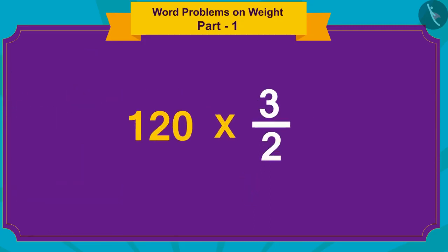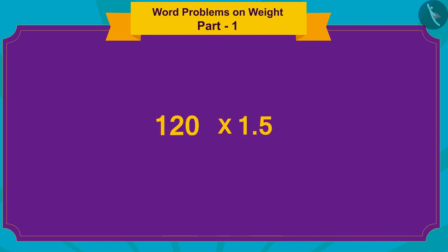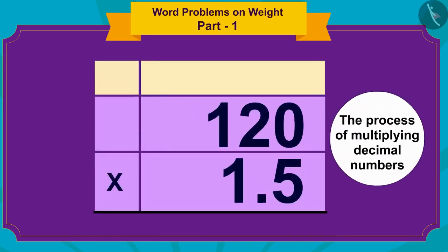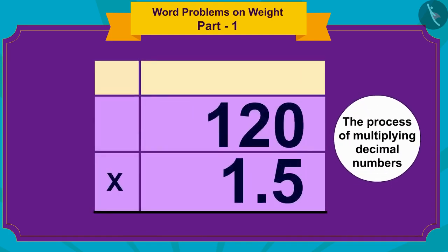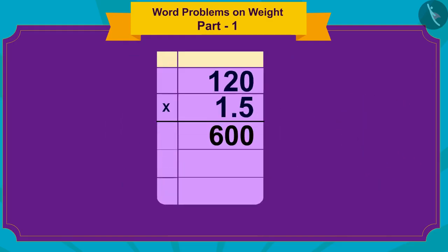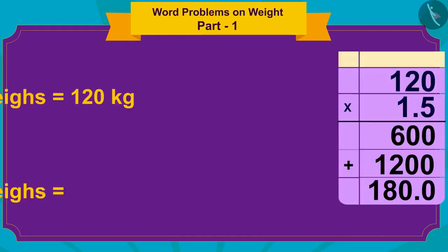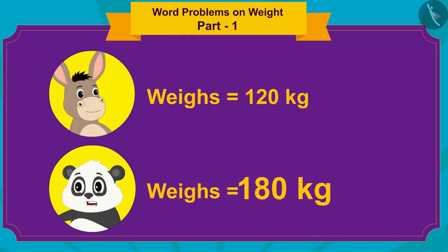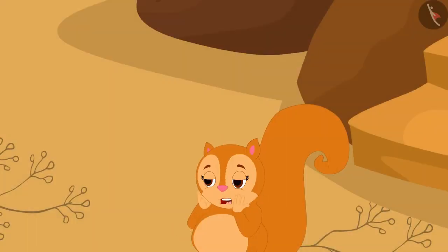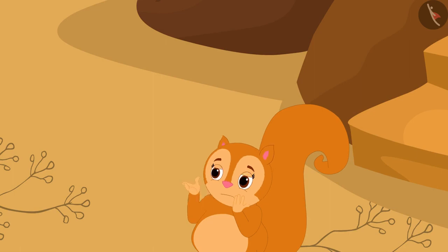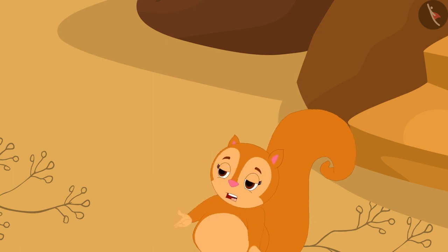Golu's weight is one and a half times Bola's weight, and Bola weighs 120 kilograms. So to find Golu's weight, we have to multiply Bola's weight by three by two, or 1.5. Children, do you remember the process of multiplying decimal numbers that we learned? Let us do this multiplication quickly.